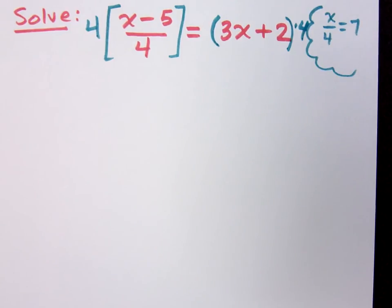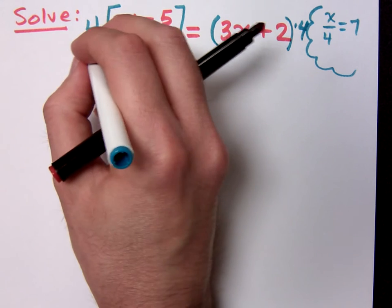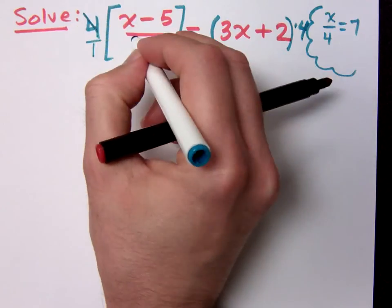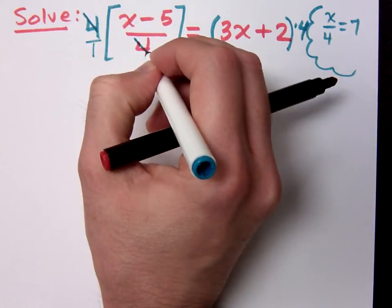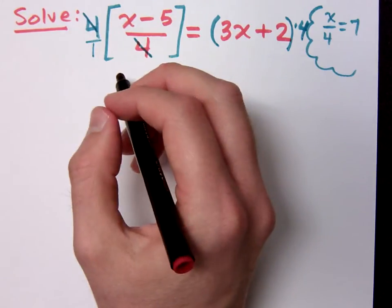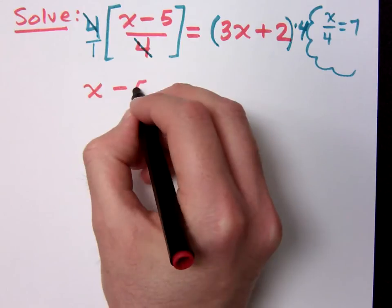Do you all agree with that? What's going to happen on the left side? Over here, this is 4 over 1, right? So we hopefully see that the 4 is reduced away — isn't that what we were trying to do anyway? So there's nothing left on the left side except for x minus 5, because the 4 is reduced away.